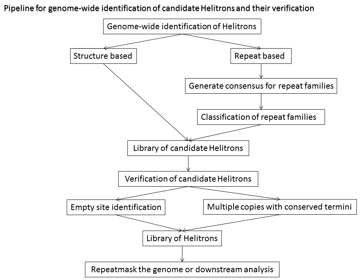Helotrons are one of the three groups of eukaryotic class II transposable elements so far described. They are the eukaryotic rolling circle transposable elements, hypothesized to transpose by a rolling circle replication mechanism via a single-stranded DNA intermediate. They were first discovered in plants Arabidopsis thaliana and Oryza sativa and in the nematode Caenorhabditis elegans, and have since been identified in a diverse range of species, from protists to mammals.